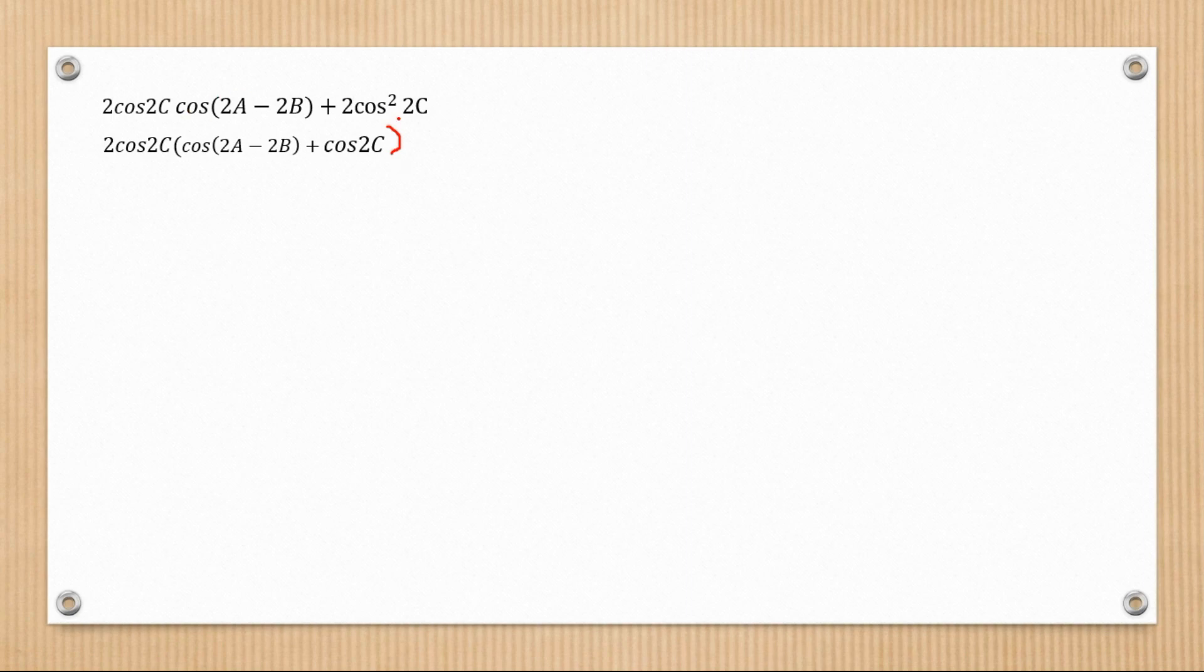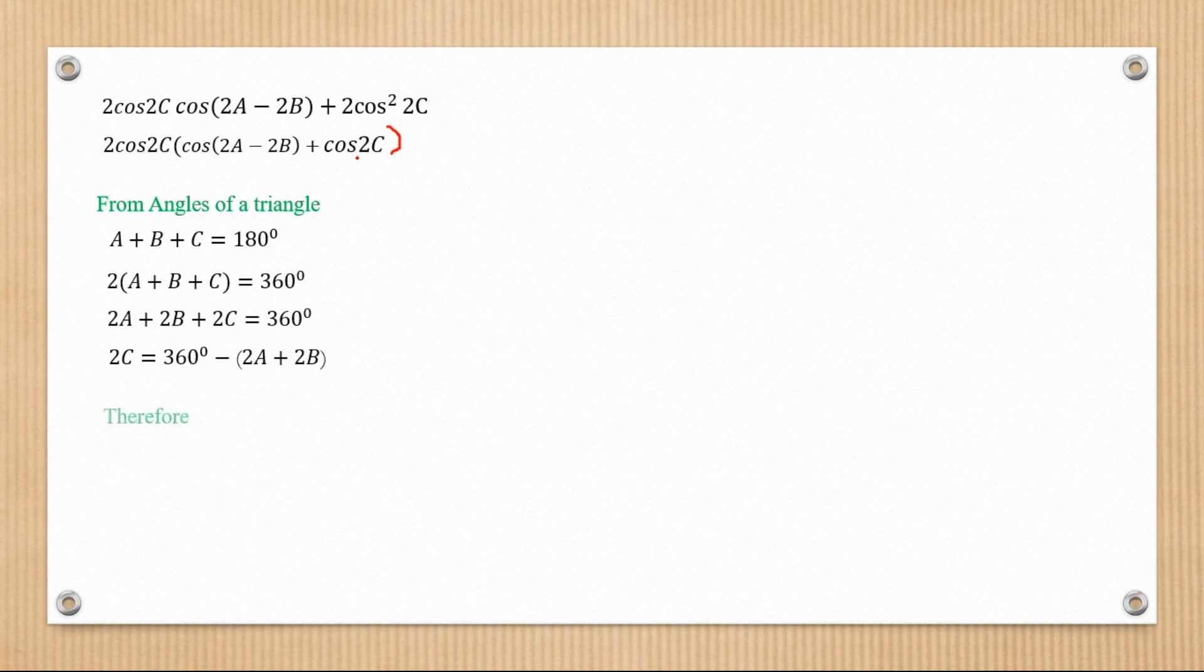Now we're going to convert this to have 2A plus 2B inside. We know from angles of a triangle that 2C is the same as 360 degrees minus 2A plus 2B.